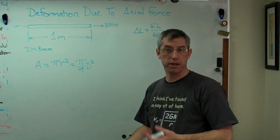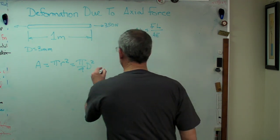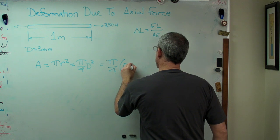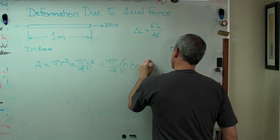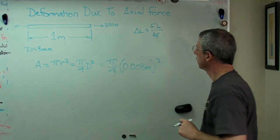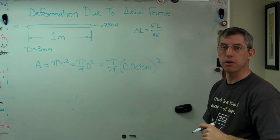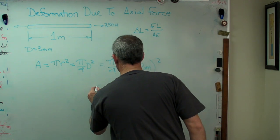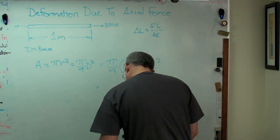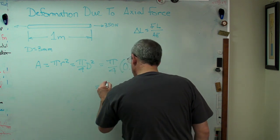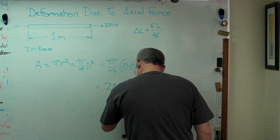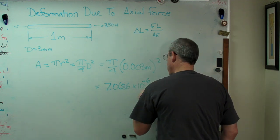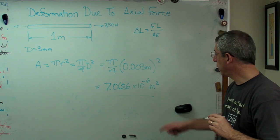Rather than converting to radius, let's use diameter directly. So area equals π/4 times (0.003 meters)². I'm going to do everything in meters — I find that keeping consistent units through the problem leads to fewer mistakes. Working that out, you get 7.0686 × 10⁻⁶ meters squared. That's our area.